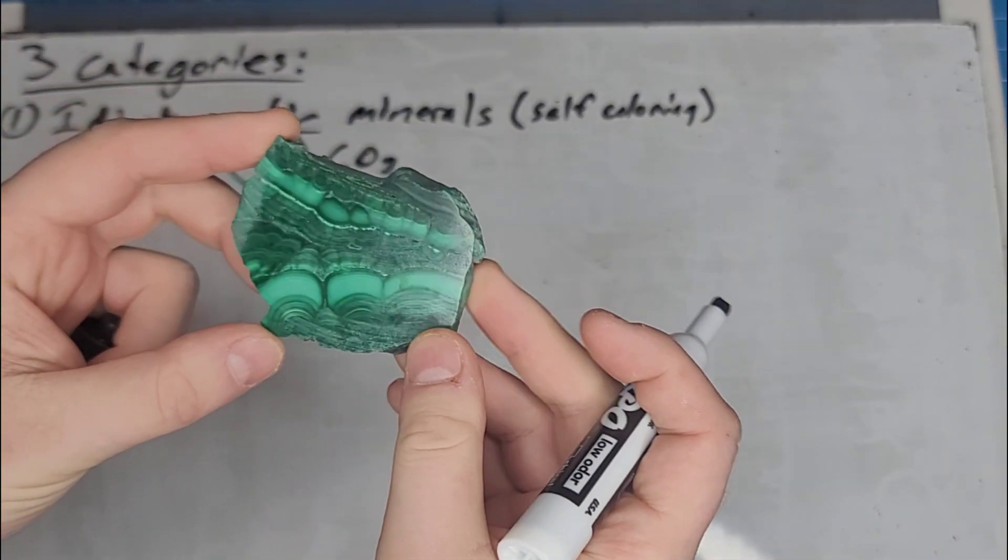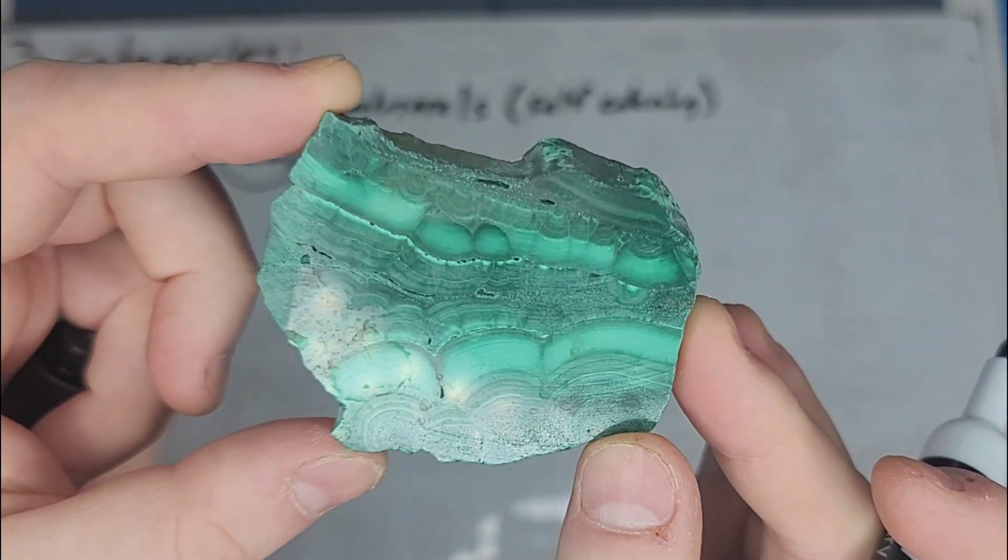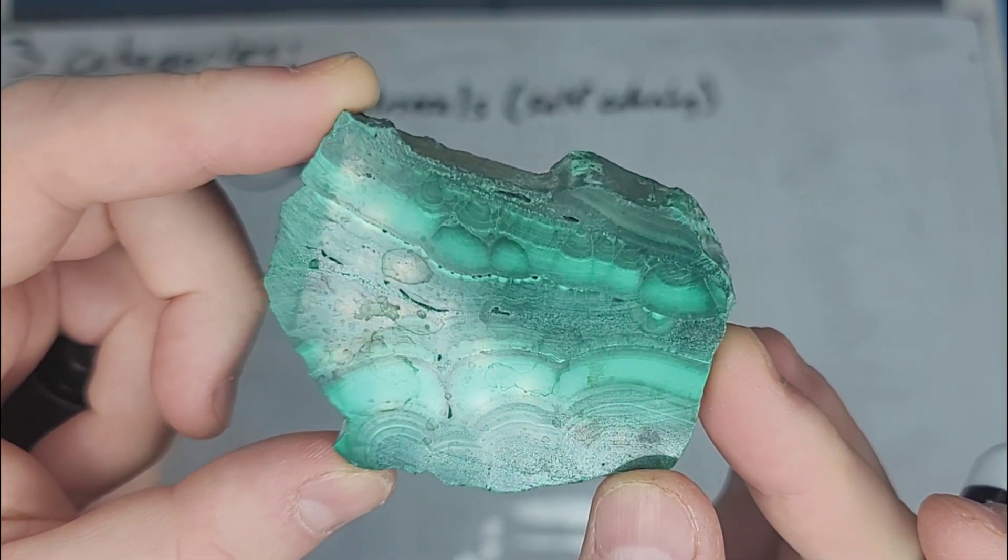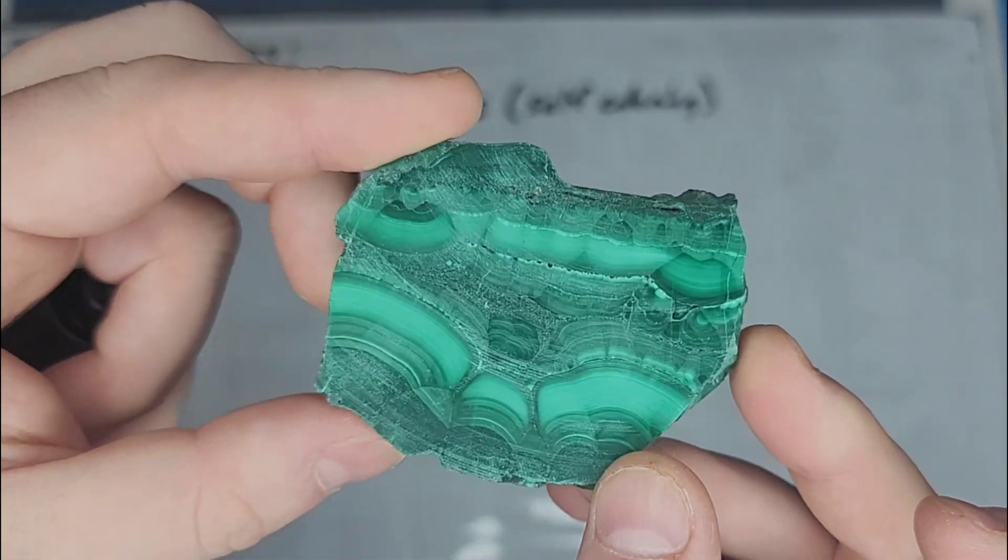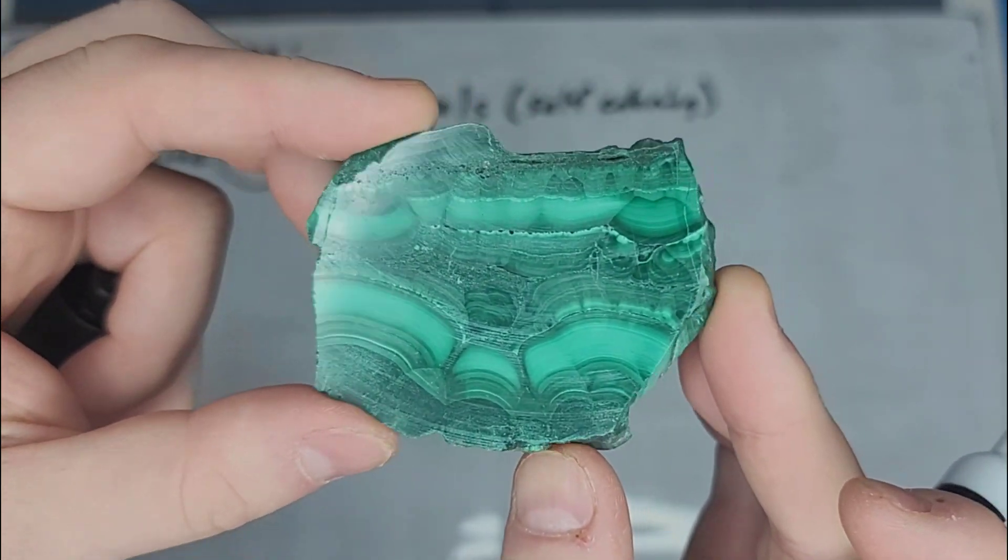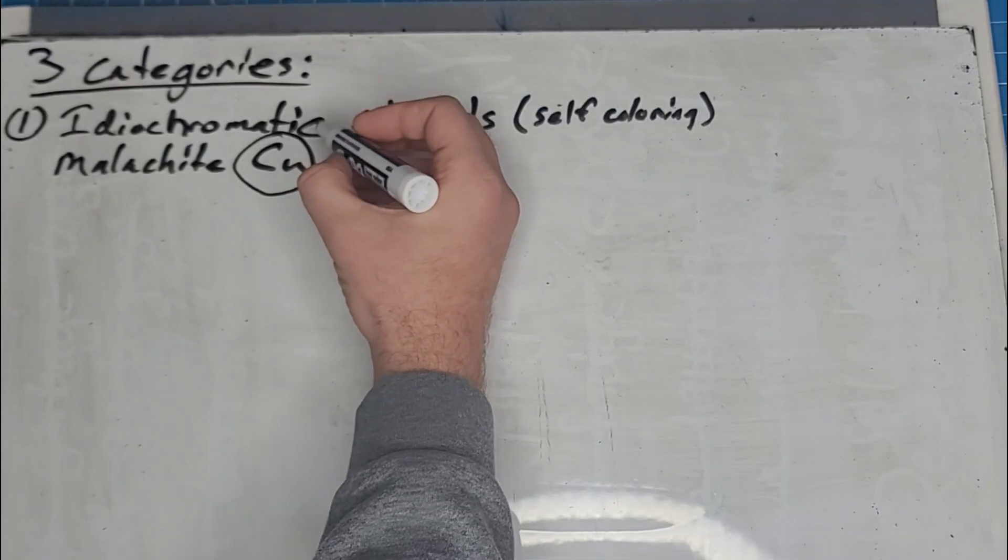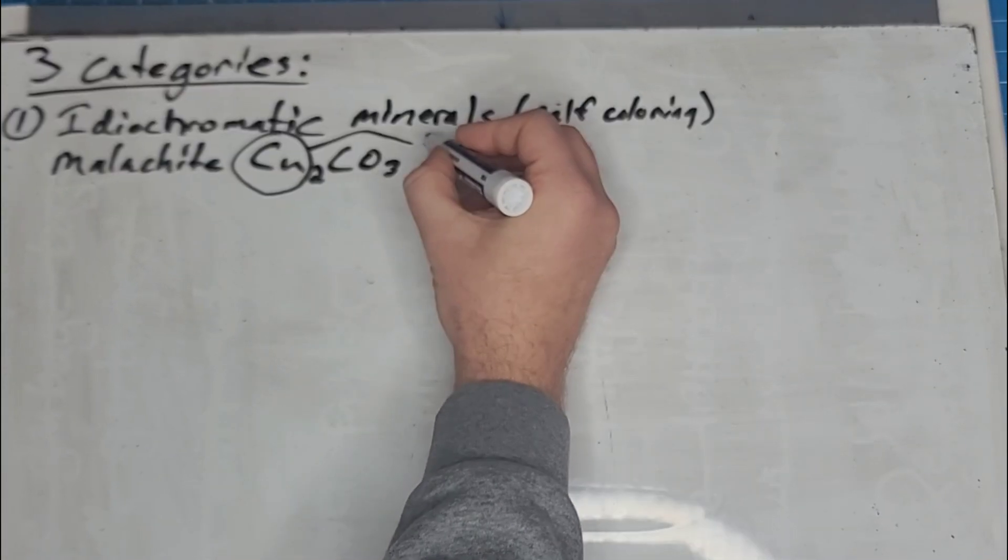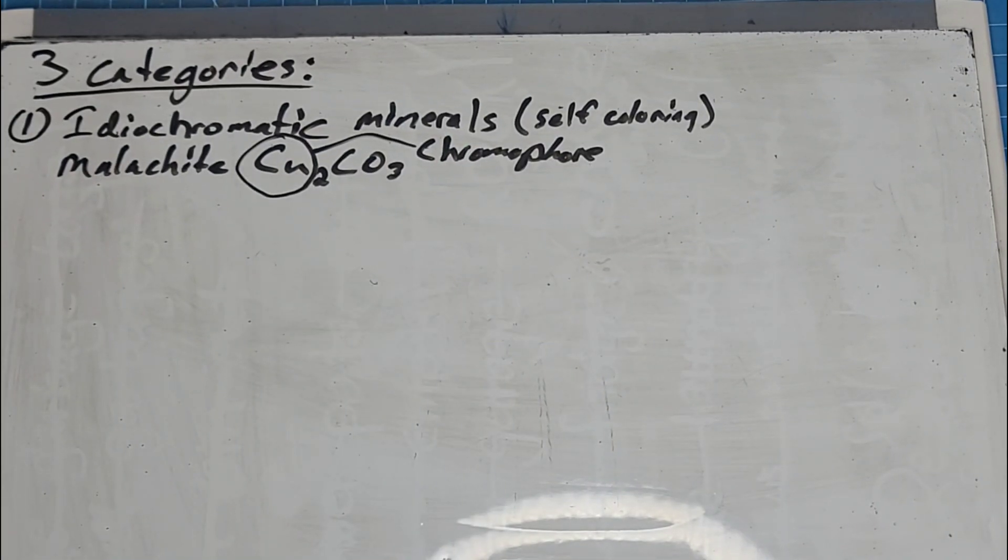And here's an example of malachite. You can see it's got a nice green color to it. This side's polished. But you can see different shades of green. That green color comes from the copper content. We call this element a chromophore. It's the coloring agent for the mineral.